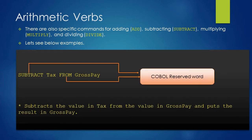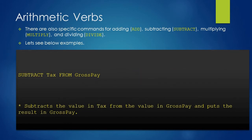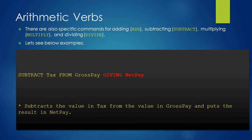Now let's see an example of SUBTRACT. In the subtract example, SUBTRACT and FROM are the COBOL keywords, and tax and gross pay are user-defined variables. The subtract statement will subtract the value in tax from the value in gross pay and put the result in gross pay. So if tax is 100 and gross pay is 500, it will subtract 100 from 500 and give the result 400 to gross pay.